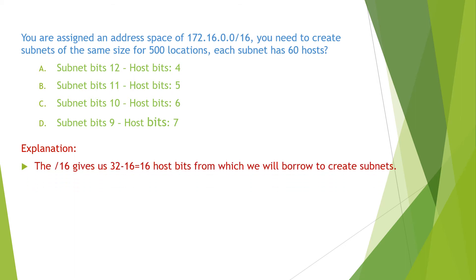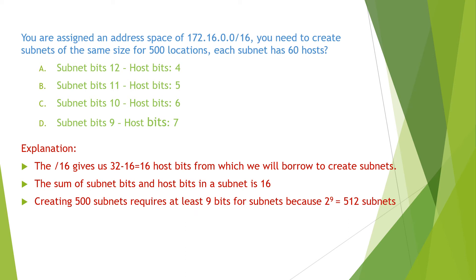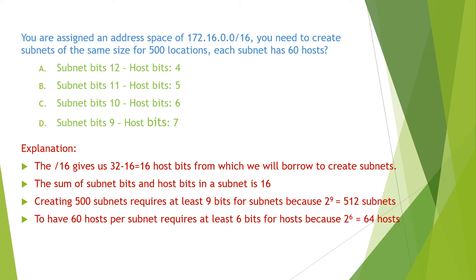To answer this question, we know that the slash 16 gives us 16 host bits from which we will borrow to create subnets. Therefore, the sum of subnet bits and host bits in a subnet must equal 16. Creating 500 subnets requires at least 9 bits for subnets because 2 to the power of 9 equals 512 subnets. To have 60 hosts per subnet requires at least 6 bits for hosts because 2 to the power of 6 equals